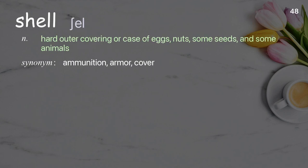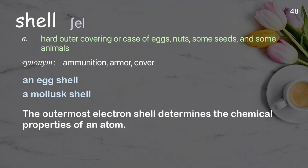Shell. Hard outer covering or case of eggs, nuts, some seeds, and some animals. Examples: an eggshell, a mollusk shell. The outermost electron shell determines the chemical properties of an atom.